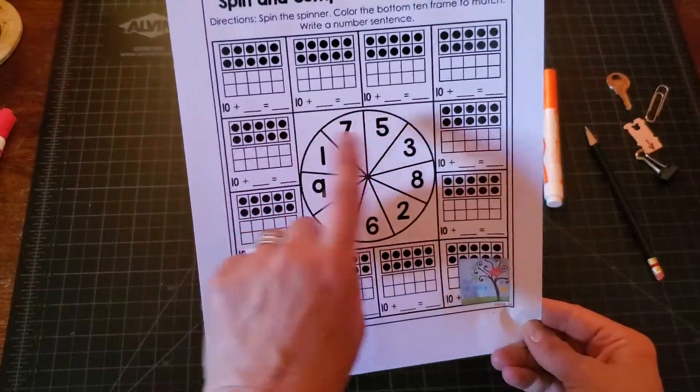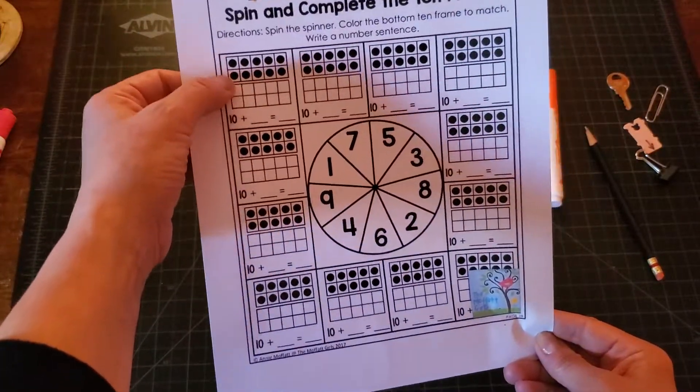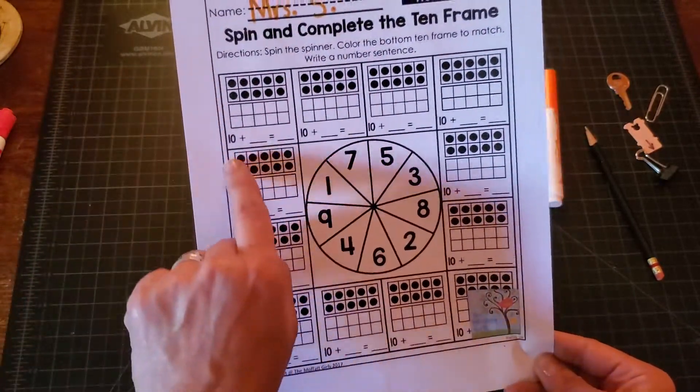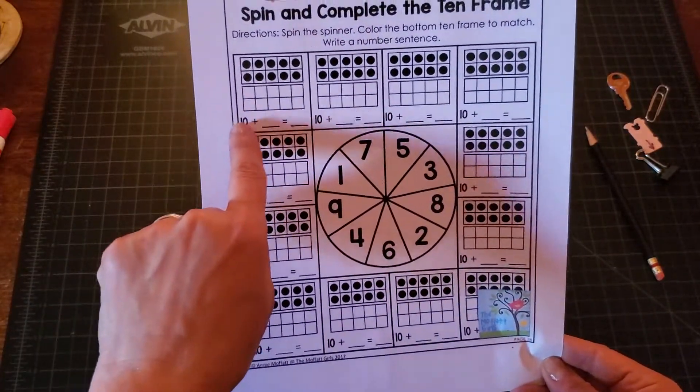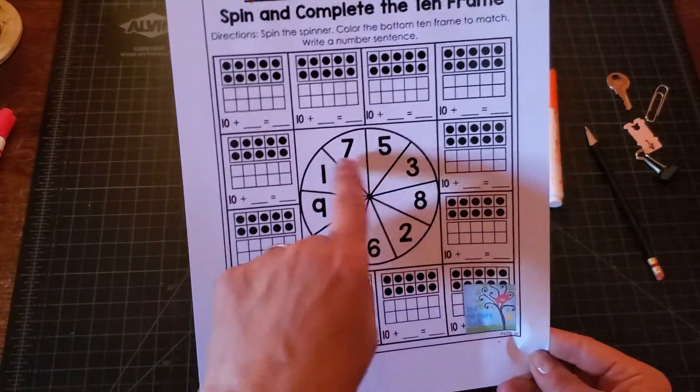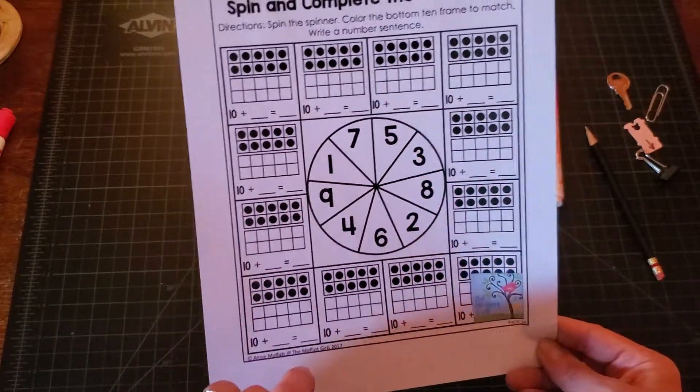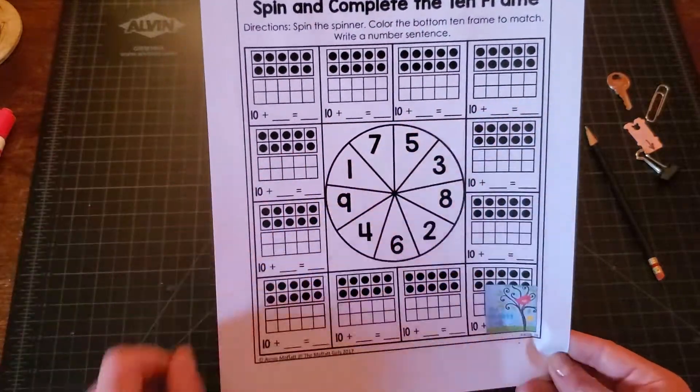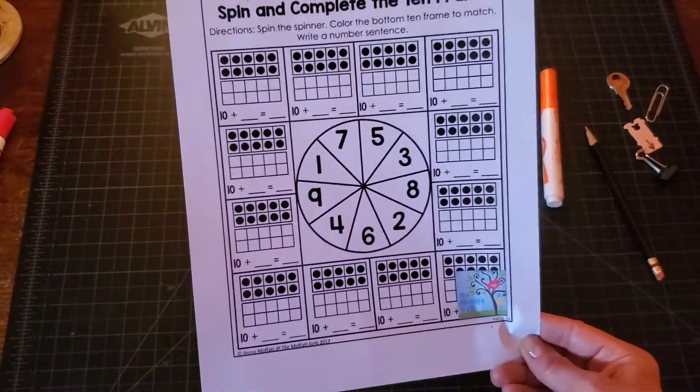So each of these squares has a ten frame completed and an empty ten frame so you can do ten plus some more. And it also gives you a number sentence frame which has ten plus what equals what. You're going to use the spinner to figure out how to fill in your second ten frame and the number that goes after the plus sign. And then all together you can add up or count what teen number you ended up composing.